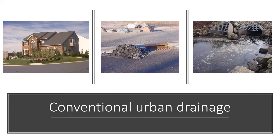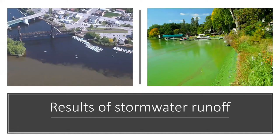Once they're in the storm sewer, those usually lead to the nearest surface water — a lake, a river, a wetland, maybe a stormwater pond in a neighborhood. And that water is untreated. It doesn't go to a wastewater treatment facility like our faucets and showers do. So whatever the water picks up when flowing over those hard surfaces ends up in our lakes and rivers, and that causes some water quality issues.